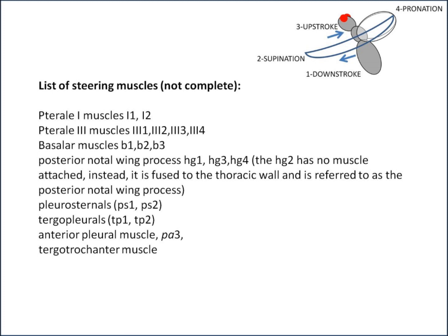Then we have the pleurosternals, PS1 and PS2; the tergopleurals, TP1 and TP2; the anteropleural muscle PA3; and finally the tergotrochantar muscle. This is not a complete list, so if I've missed some, please add them in the comments.